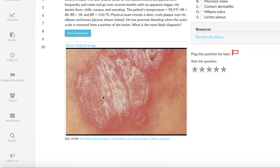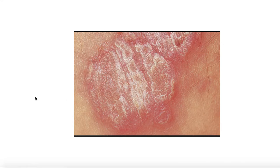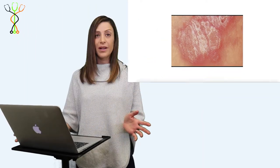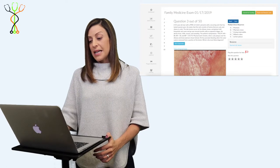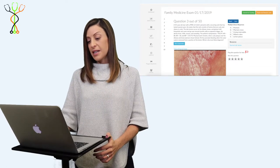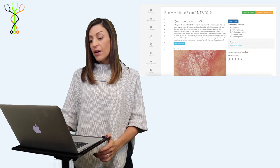There's a photo shown in this question that should really help you figure out what this diagnosis might be. You also note that he has punctate bleeding when one of the scales is removed from this lesion. So the question is, what is the most likely diagnosis here? Options are psoriasis, pityriasis rosea, contact dermatitis, miliaria rubra, or lichen planus.